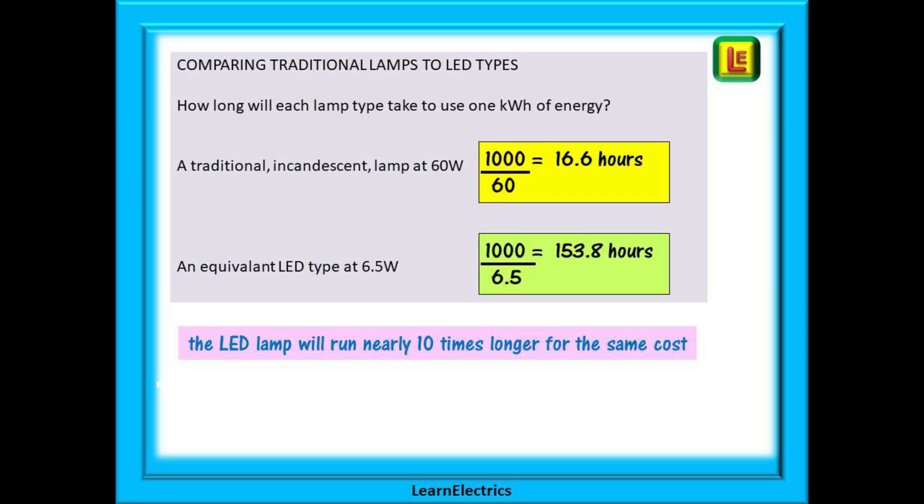How do modern LED lamps stack up against traditional incandescent lamps? The best way to compare is to calculate how long each lamp type takes to use one kilowatt hour of energy. A 60 watt traditional incandescent lamp burning constantly will take about 16.6 hours to clock up one kilowatt hour. An equivalent LED giving a similar light output may only be 6.5 watts, equating to 153.8 hours before the same amount of energy is used — almost 10 times as long as the older lamp.